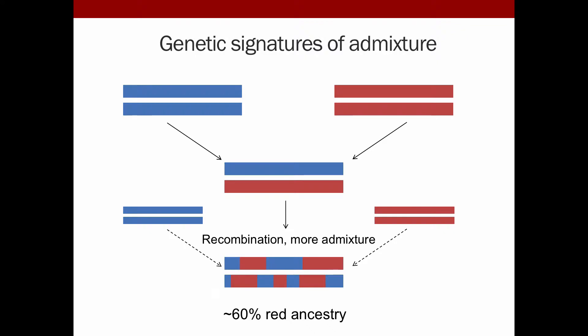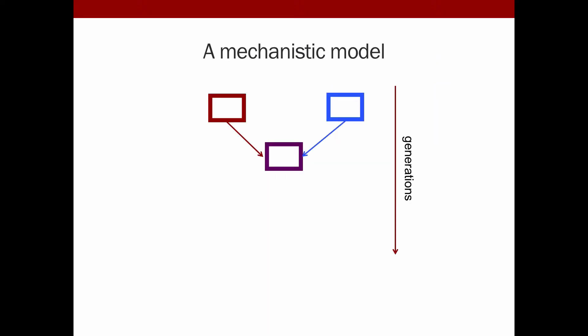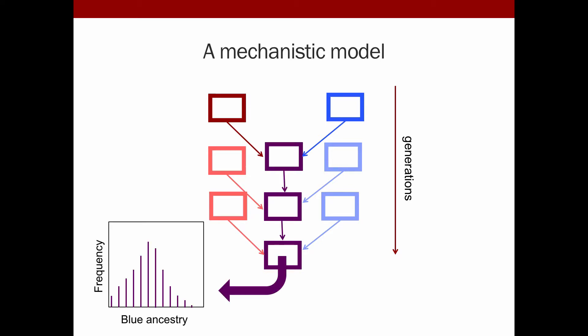We're going to study the summary statistic in a mechanistic model. We have the red population and the blue population combining to create an admixed population in a first generation. We have discrete generations with potentially more or varying contributions from the red and blue source populations to the admixed population. Each of these arrows is parameterized by sex specific contributions of males and females potentially migrating at different rates over time. In this final generation, we're studying the distribution of our summary statistic, the ancestry proportion within a population. For example, here, just an example plot of blue ancestry, which as I said, will likely vary throughout the population.